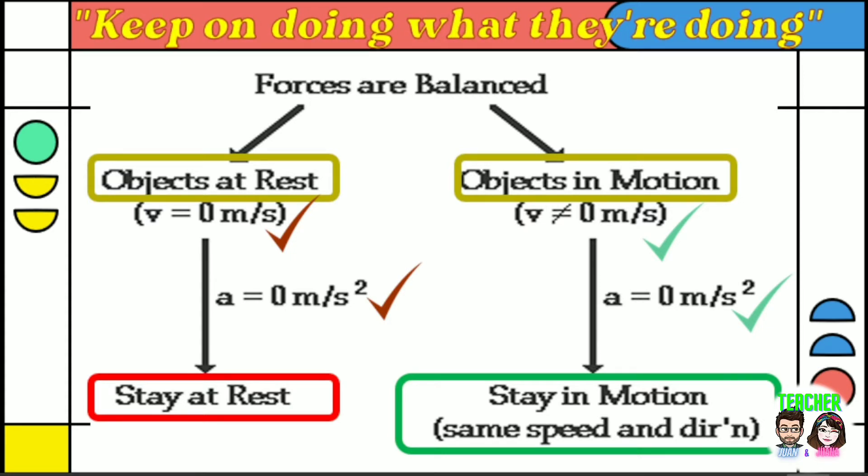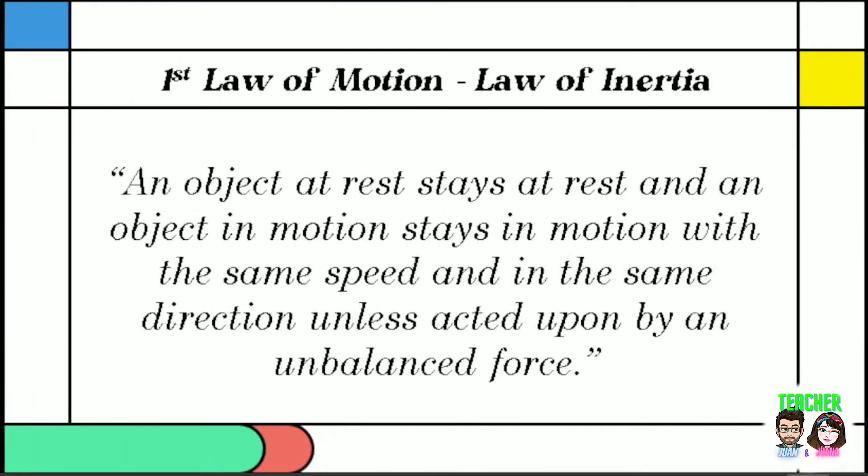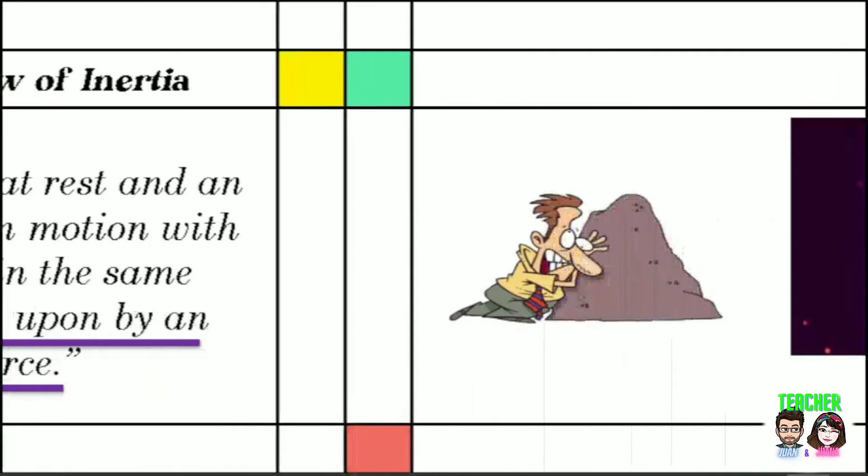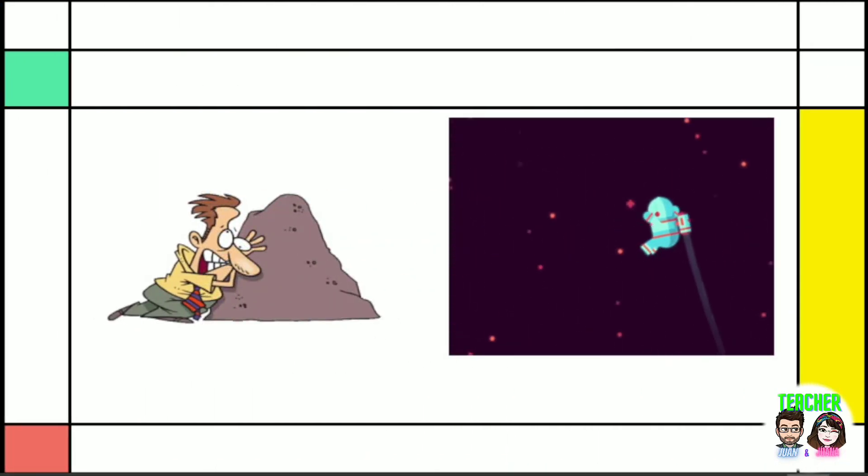Remember that there is an important condition that must be met in order for the first law to be applicable to any given motion. The condition is described by the phrase, unless acted upon by an unbalanced force. As long as the forces are balanced, the first law of motion applies. It is the natural tendency of objects to resist changes in their state of motion. This tendency to resist changes in their state of motion is described as inertia.